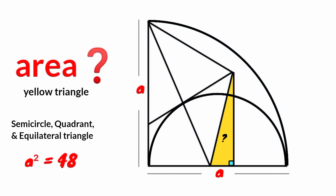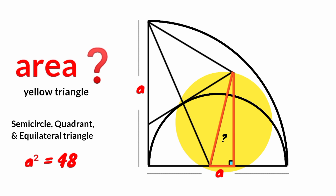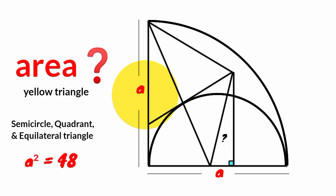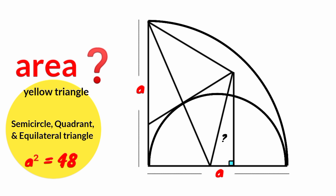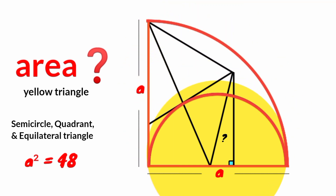Hi friends, you are welcome back to another interesting question. We are asked to calculate the area of this yellow triangle. We have learned this side to be A and this is also A. This angle is a right angle. From here there are three unique shapes: a semicircle, a quadrant, and an equilateral triangle. This is the quadrant, there is the semicircle, and as for the equilateral triangle, obviously this is it.